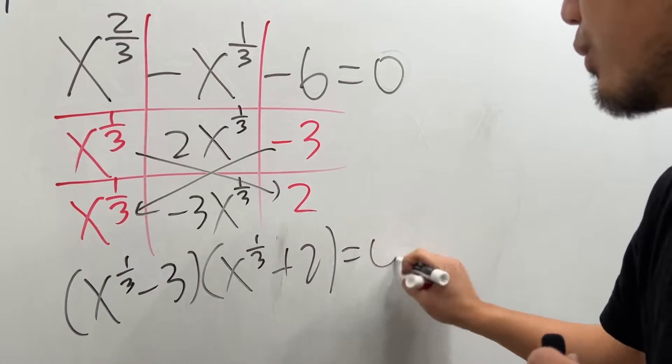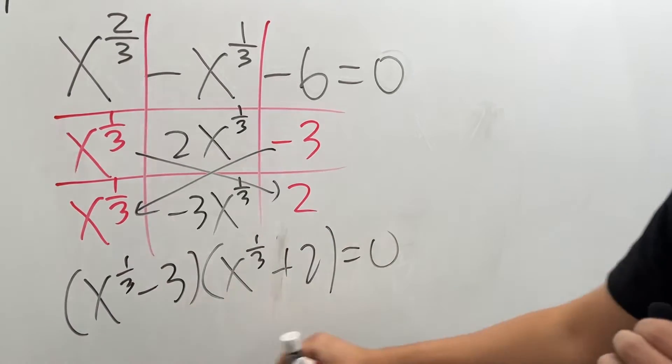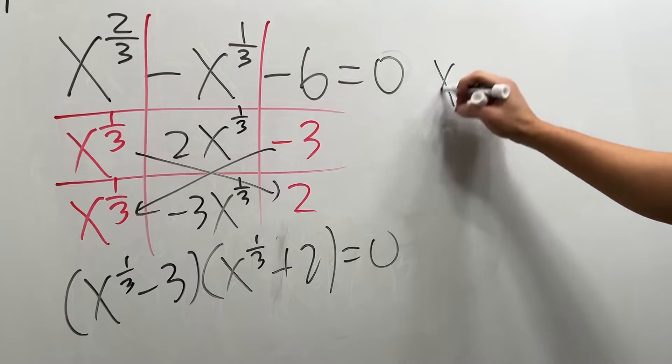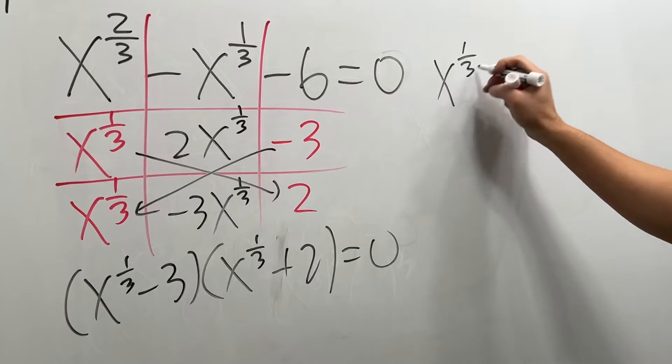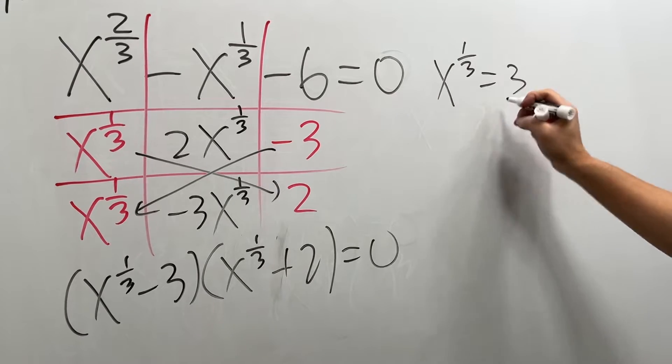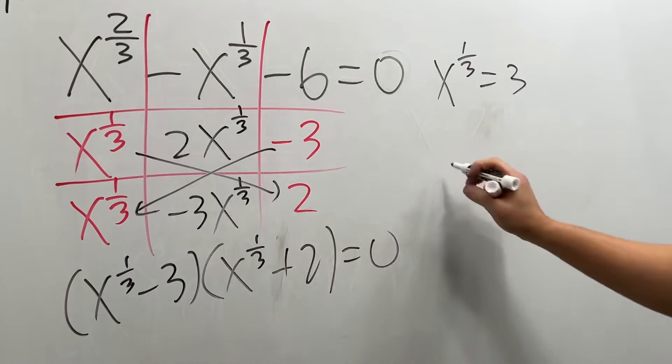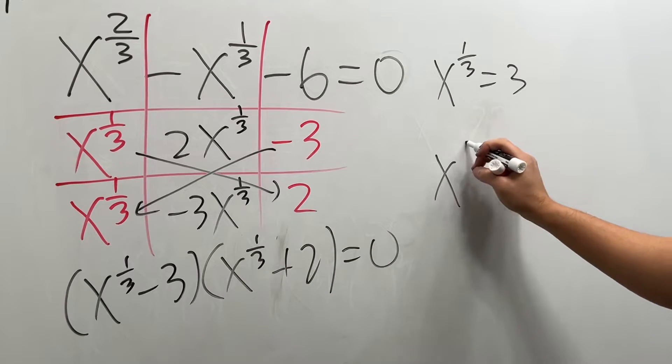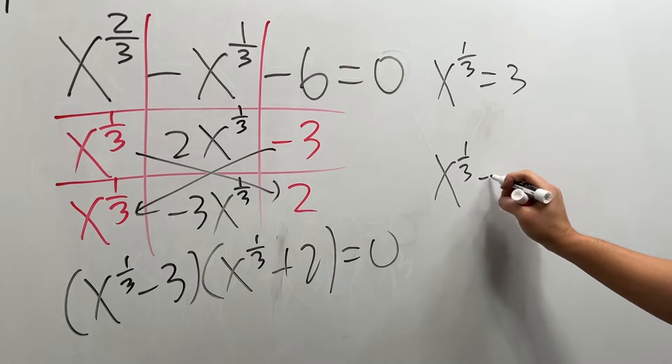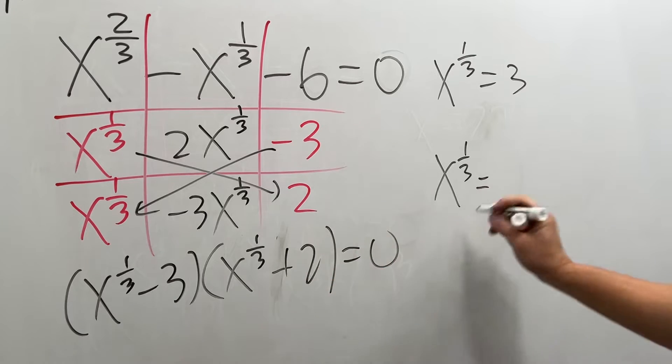And that's equal to 0. From here, you know that x to the one-third is equal to 3, and from here, x to the one-third is equal to negative 2.